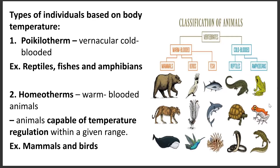The types of individuals based on body temperature — we have two. The first is poikilotherm, which are cold-blooded animals such as reptiles, fish, amphibians, and insects. The second is homeotherm, which are warm-blooded animals such as mammals and birds, which are capable of temperature regulation within a given range. Warm-blooded animals typically have fur and feathers, while cold-blooded animals include reptiles, amphibians, and fish.